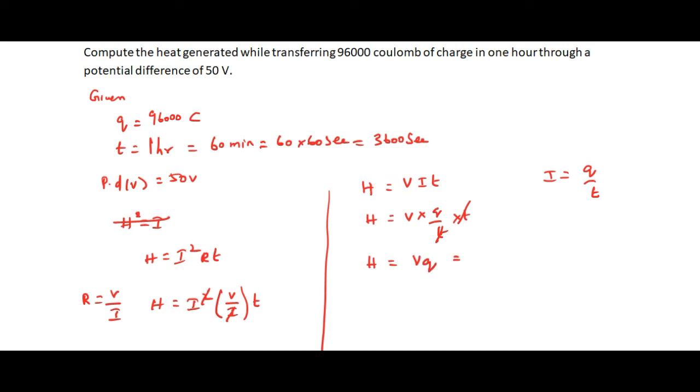The voltage is given as 50 volts and the charge is 96,000 coulombs. So the value we get is 50 times 96,000, which equals 4,800,000 joules.